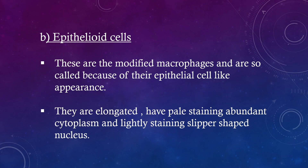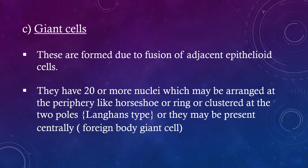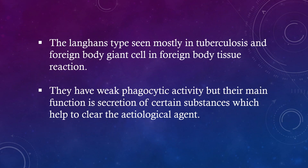Epithelioid cells. These are modified macrophages and are so called because of their epithelial cell-like appearance. They are elongated, have pale staining abundant cytoplasm and a lightly staining slipper-shaped nucleus. Giant cells. These are formed due to fusion of adjacent epithelioid cells. They have 20 or more nuclei which may be arranged at the periphery like a horseshoe or ring, or clustered at the two poles — Langhans' type — or they may be present centrally — foreign body giant cell. The Langhans' type is seen mostly in tuberculosis and foreign body giant cells in foreign body tissue reaction. Giant cells have weak phagocytic activity but their main function is secretion of certain substances which help to clear the etiological agent.